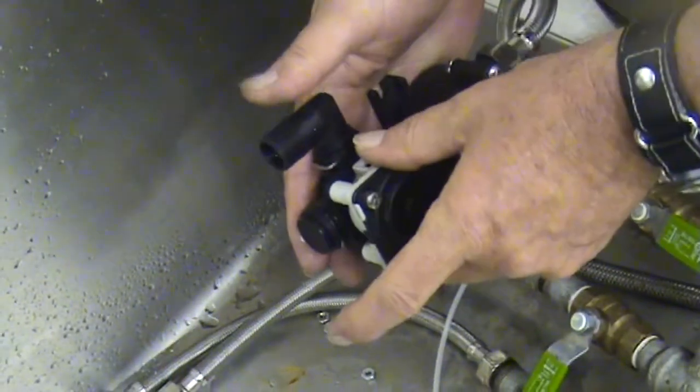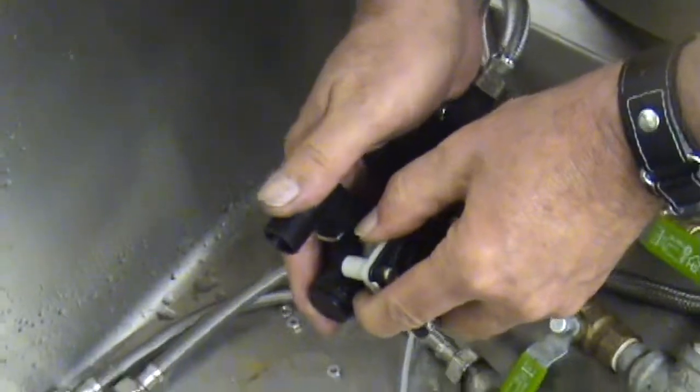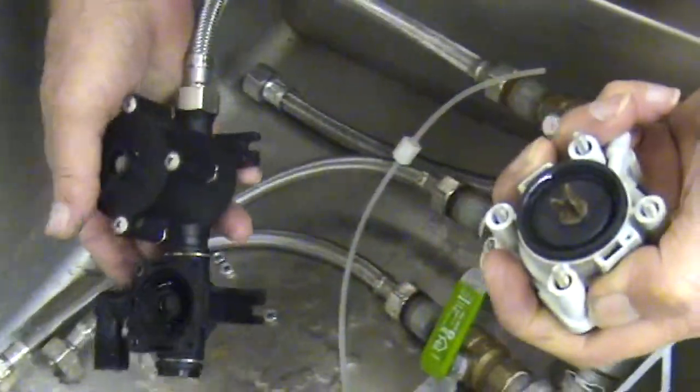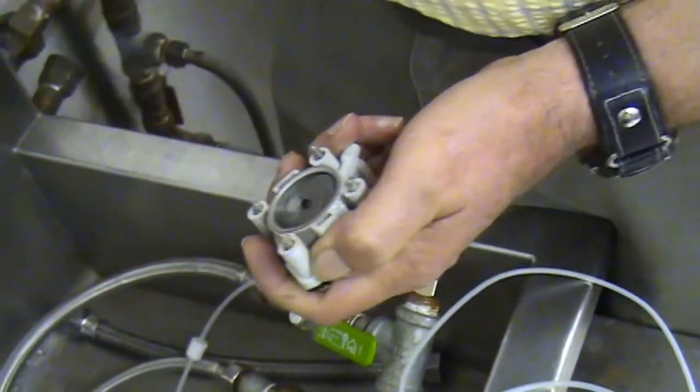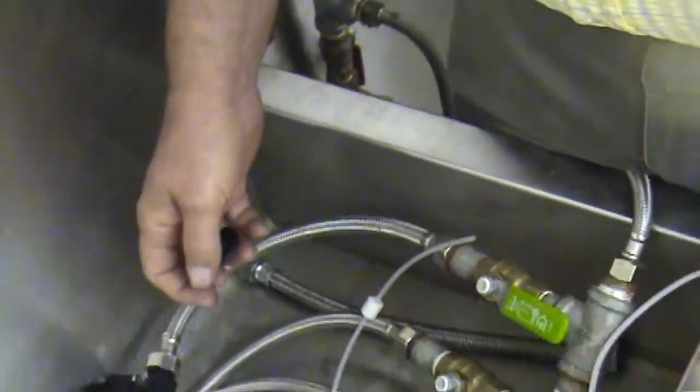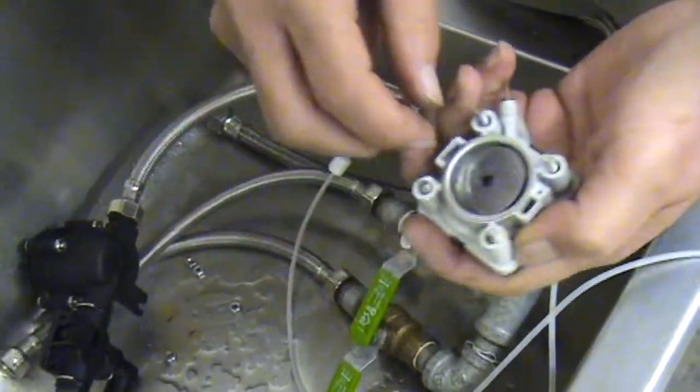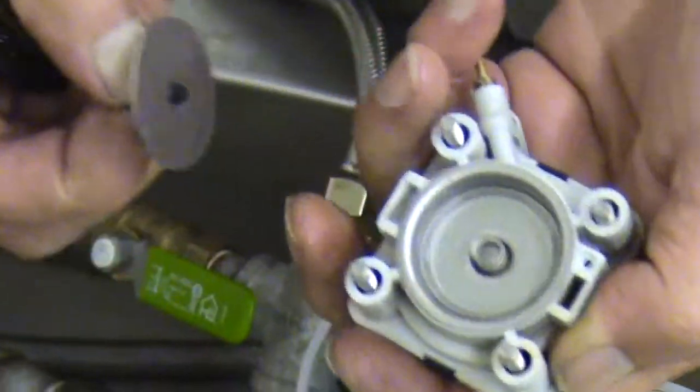When you take the servo motor off, grab it by the white part, pull straight up, it will come off. As you can see we've got the water diaphragm came off with the servo motor. You'll notice the orifice plate and the little spring are held in place by the magnet in the servo motor.